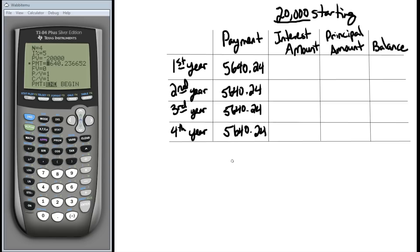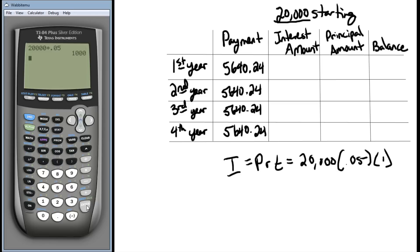If I want to know how much that interest amount is, I just simply put it in the simple interest formula. Interest is PRT. In this case, it's $20,000. Our rate was 5%, and our time was one year. So we'll go to our calculator, quit out of this, and do $20,000 times .05, and we'll see that our interest was $1,000.